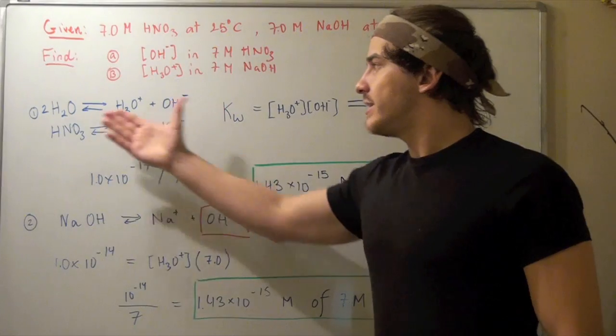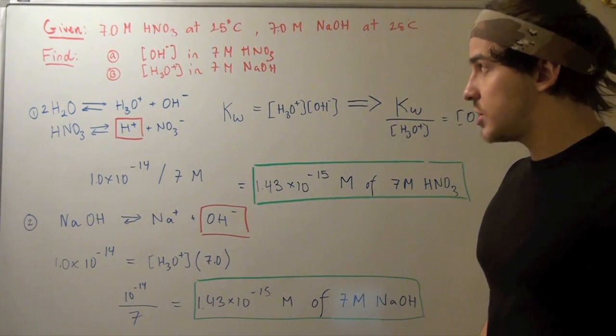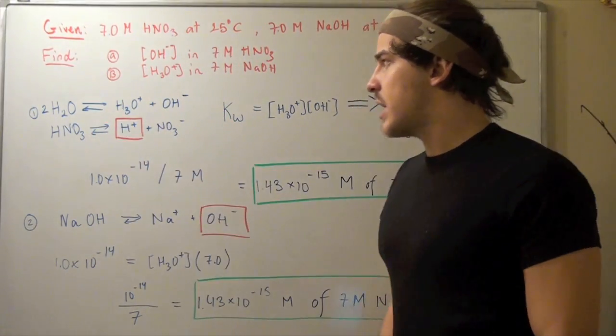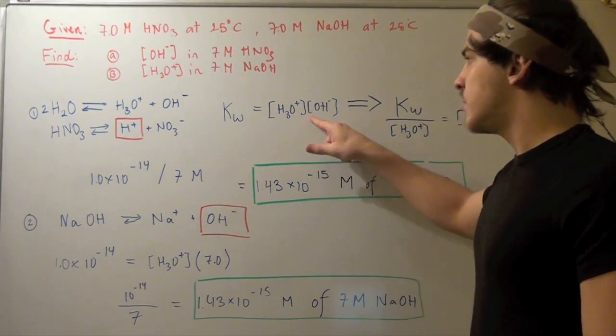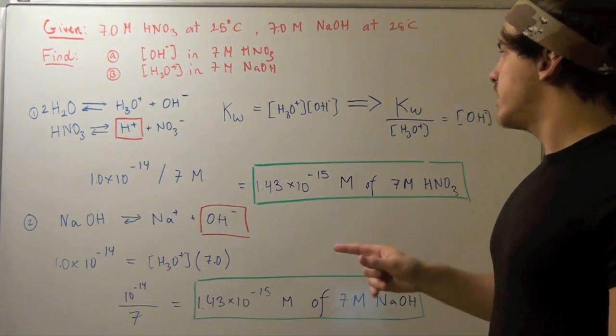Now, let's write the equilibrium constant equation or expression for our autoionization reaction. KW is equal to concentration of hydronium times the concentration of hydroxide.